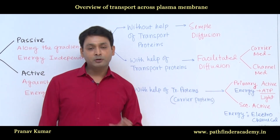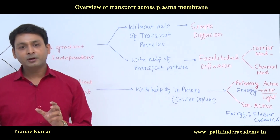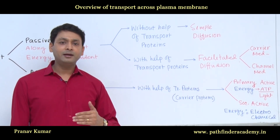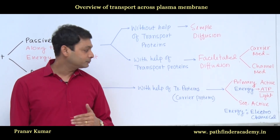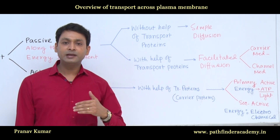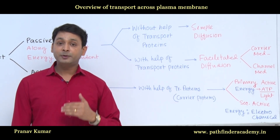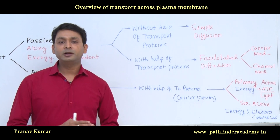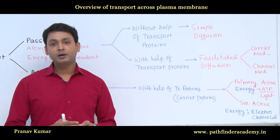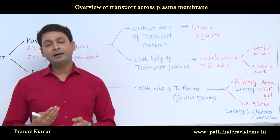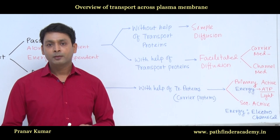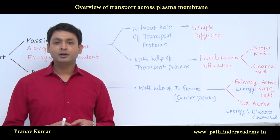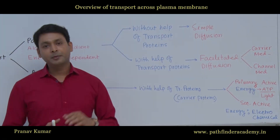Whereas, in secondary active transportation, the energy source is the electrochemical gradient. In this process, only the co-transporter participates, and that co-transporter can be an antiporter or a symporter. So, this is a brief overview of the transportation across the plasma membrane.